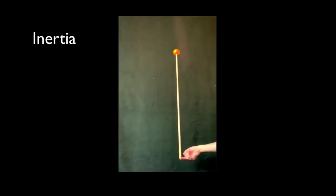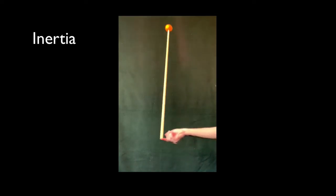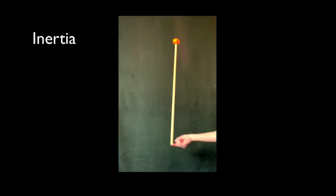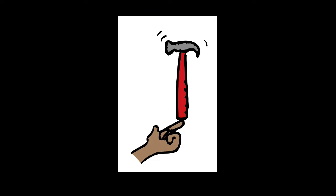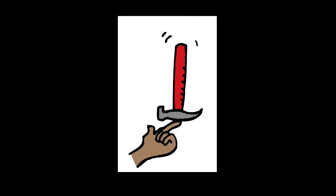So the orange has all this inertia. That means a greater tendency to stay where it is. That's why it's easier to balance a hammer on your finger like this than like this.